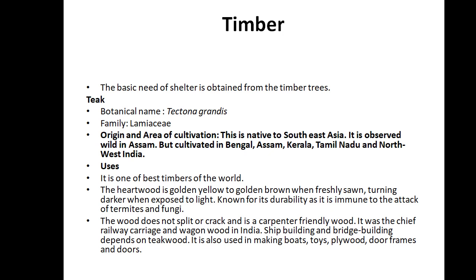Next is timber. Timber is a basic need for shelter and is obtained from timber trees, used in door frames, windows, and furniture. Teak is the best timber of the world. Its botanical name is Tectona grandis and its family is Lamiaceae. It originated in South East Asia and is cultivated in Assam, West Bengal, Kerala, and Tamil Nadu in India.